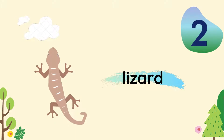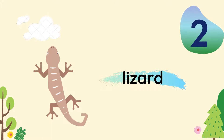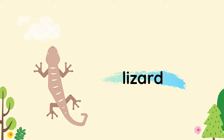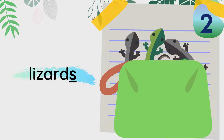Number 2: one lizard is spelled 'lizard'. More than one lizard is spelled with an S — 'lizards'. Good job!